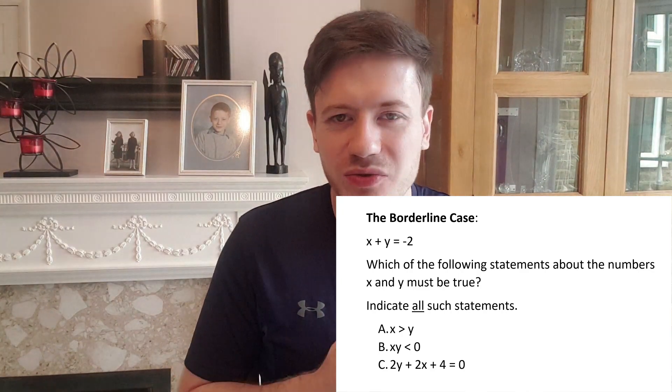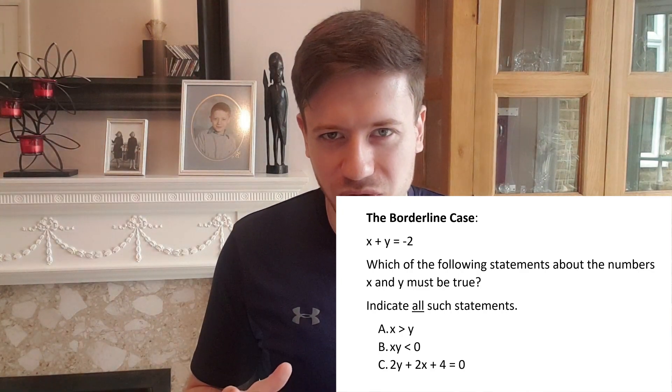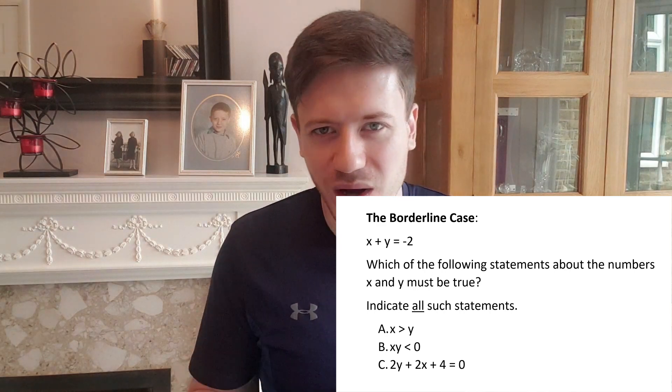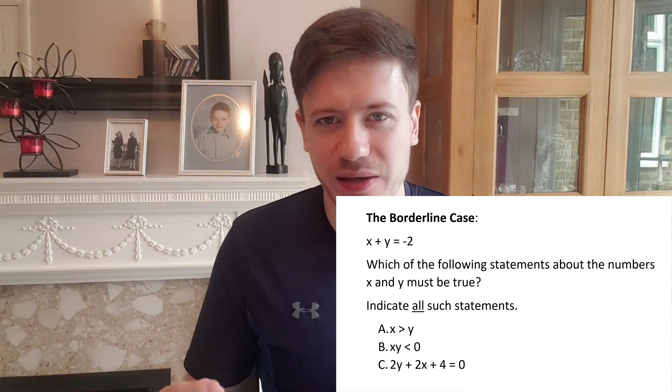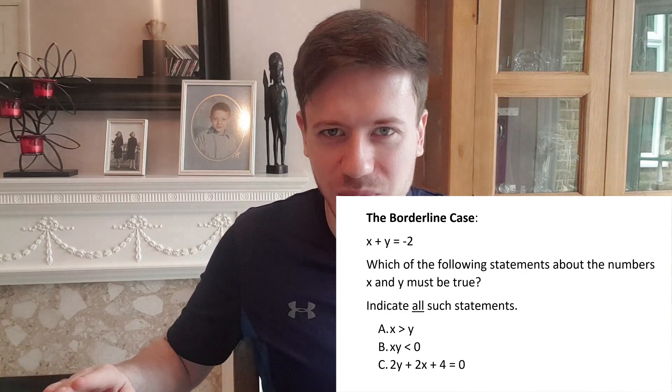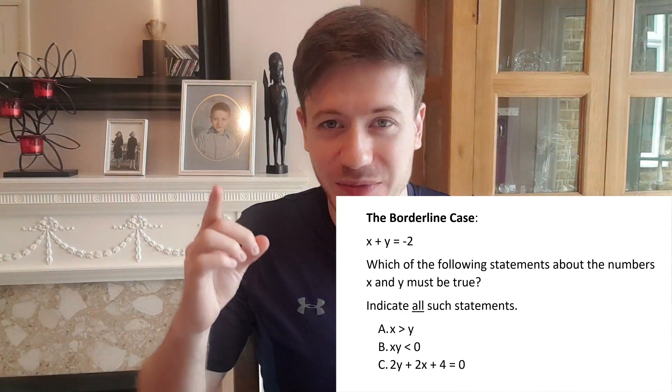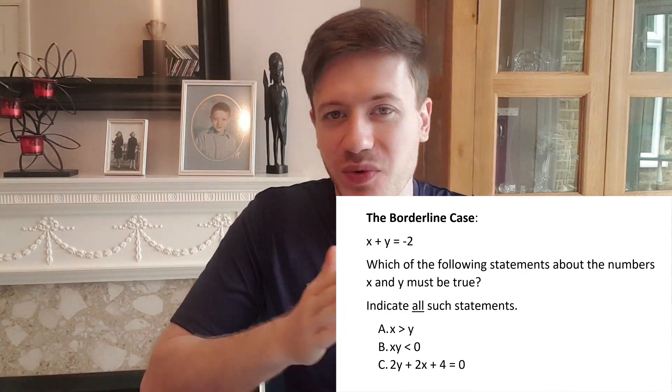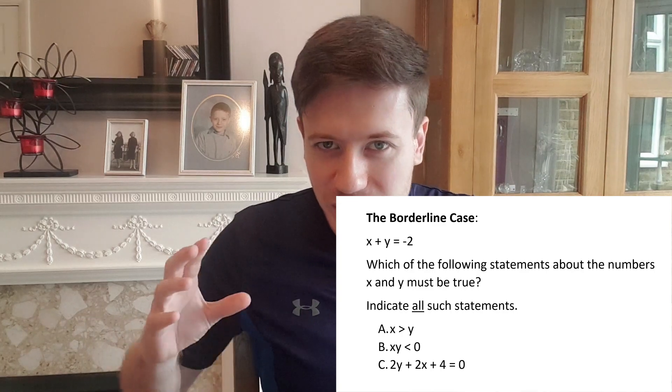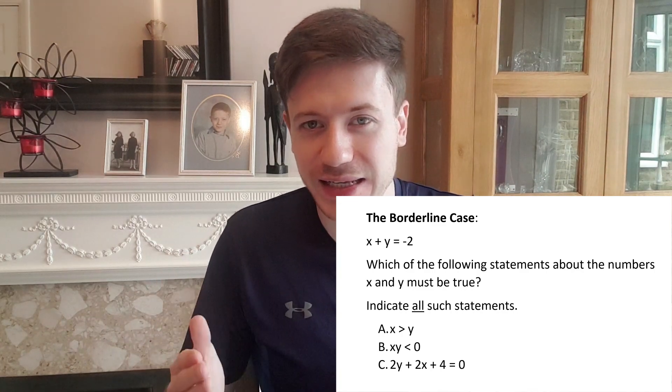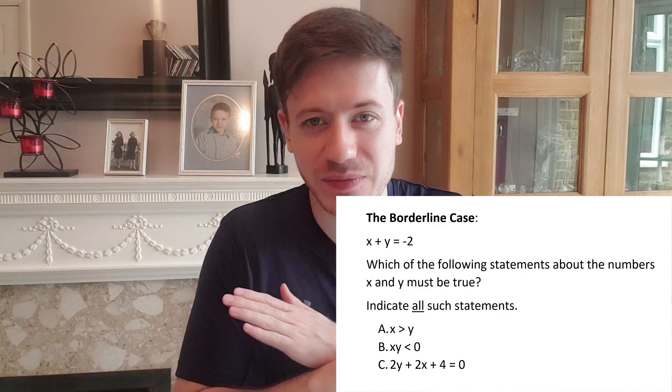With those numbers in mind we can already see that statement 1 can't be true. If x is minus 1 and y is minus 1 then x is not bigger than y. So we've eliminated statement 1. And we've eliminated statement 2 because if x is minus 1 and y is minus 1 then when you multiply them you don't get a negative you get plus 1. So statement 2 is out.